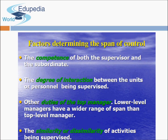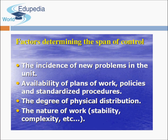Factors determining span of control also include: the incidence of new problems — if new problems arise frequently, the span should be narrow; availability of standardized plans, policies, and procedures — if procedures are standardized, the manager can control more subordinates; degree of physical distribution; nature of work; and stability and complexity. Management must consider all these factors when deciding whether the span of control should be wide or narrow.